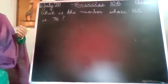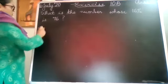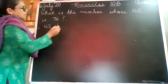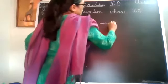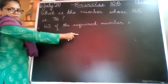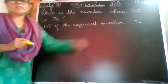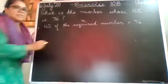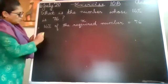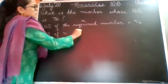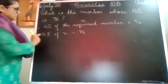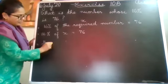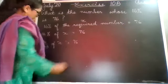So whatever is given here in words, I will write it in figures. So 16% of the required number is the number that we want. So when we did 16% of the required number, we got the answer 76. Now the required number, instead of writing such a big thing, you can simply write X. So 16% of X equals 76. Now 16% means 16 upon 100 of X equals 76.